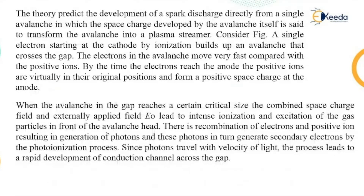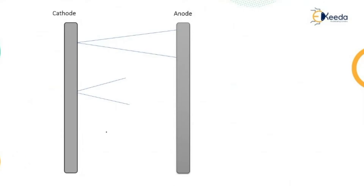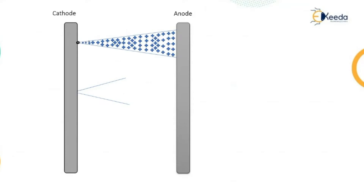This results in a further increase in the space charge. This process is very fast, and the positive space charge extends to the cathode very rapidly, and that forms a streamer. Comparatively narrow luminous tracks occurring at breakdown at high pressures are called streamers — that is the definition of a streamer. As soon as the streamer tip approaches the cathode, a cathode spot is formed.